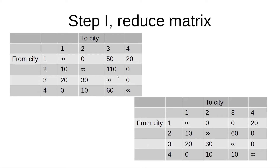Now we observe this table critically and find out if there is a zero in each and every column. As we find, in column number 3 we do not have a zero. So we find the least cost entry in that column and reduce it from the other cost elements. The least cost entry here is 50: 50 minus 60 gives 10 (corrected entry), and 110 minus 50 gives 60. So finally we get this table. This step is known as matrix reduction.